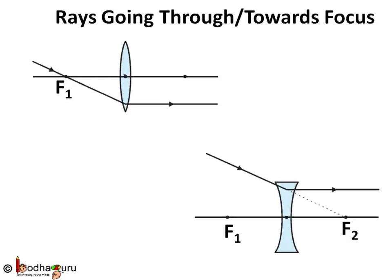The light ray passing through the focus in case of convex lens, or the light ray traveling in the direction of focal length in case of concave lens, will take path parallel to principal axis after refraction.